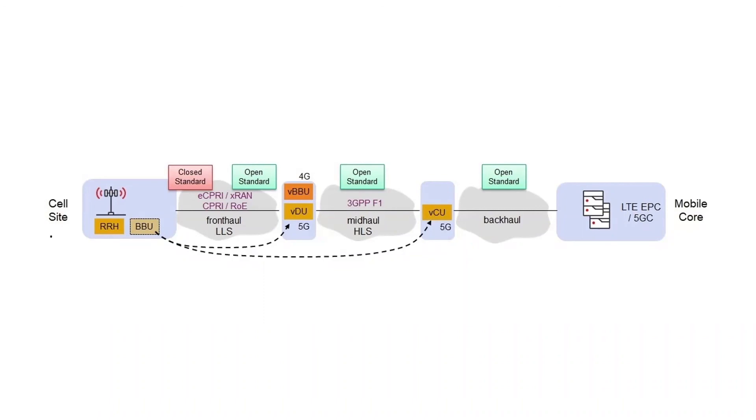Because there are so many radios, you don't want to have a BBU associated with each radio. So that functionality has been broken out into two parts, the distributed unit or the DU and the CU or the centralized or cloud unit.